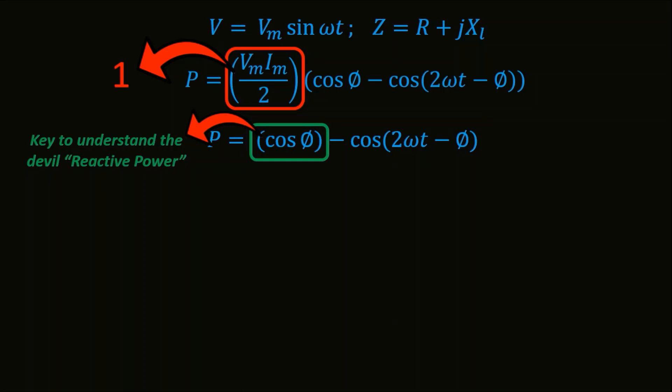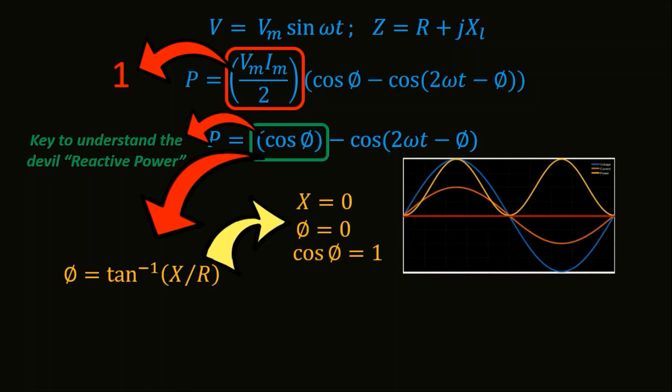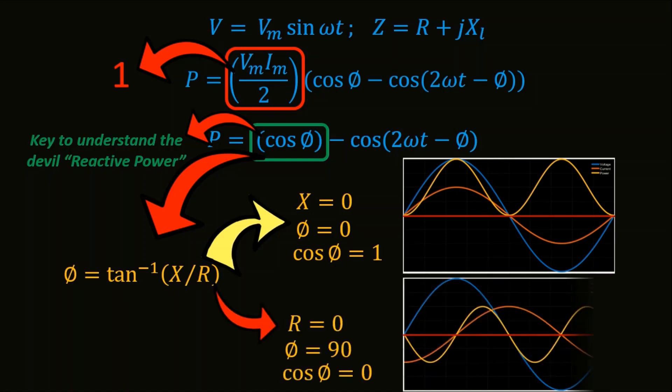Two cases that we have seen are when the load is purely resistive. All the power is positive and hence nothing is being stored. Here the shifting term is 1. In second case, all energy received was stored in 1 by 4th of cycle and sent back in next 1 by 4th of cycle. Here the shifting term is 0.